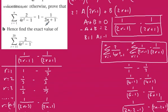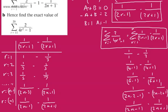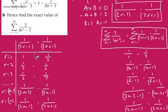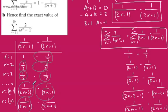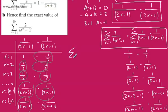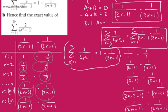All we are asked to show is that it equals 1 minus 1 over 2n plus 1, and you can quite clearly see that's going to be the case, as all of the middle terms cancel out — that's why it's often called a telescoping series. Each term cancels with its neighbour, and we're simply left with 1 minus 1 over 2n plus 1. So we've shown that using the method of differences.